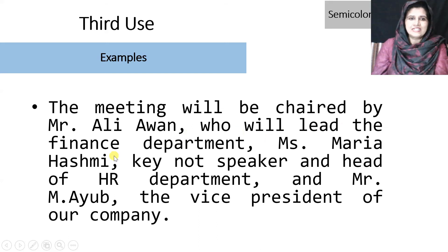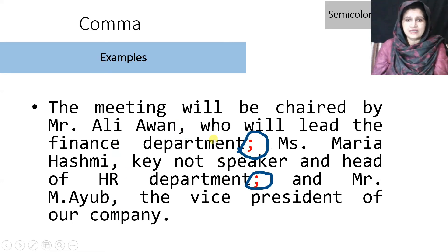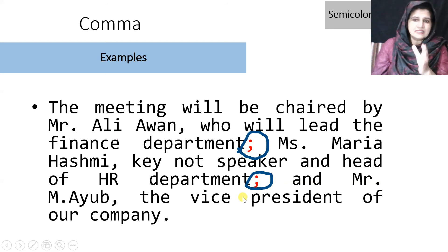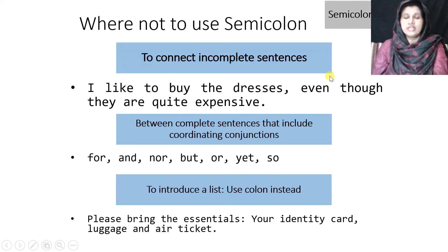Another example: 'The meeting will be chaired by Mr. Ali, who will lead the finance department; Miss Maria Hashmi, keynote speaker and head of HR department; and Mr. Muhammad Ali, vice president of our company.' Again, there are many commas that can be confusing, so we separate the items using semicolons. After adding semicolons, the reader will not be confused and the list will not be mixed up.